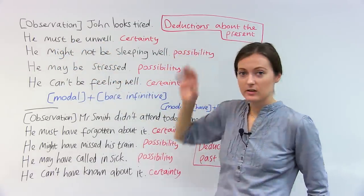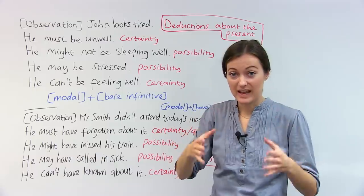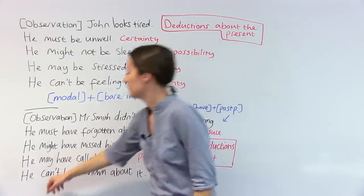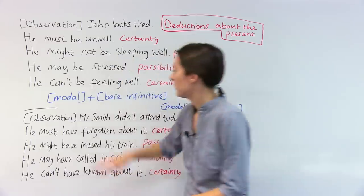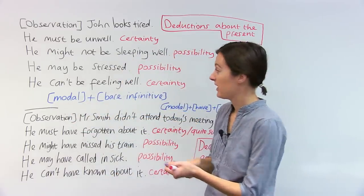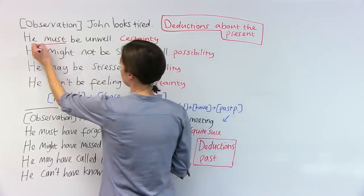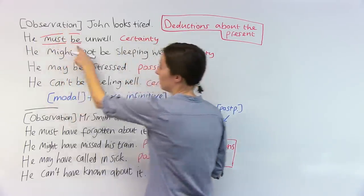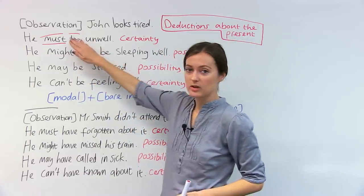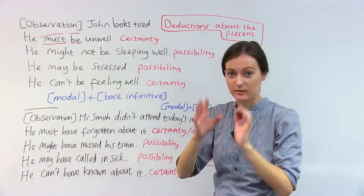When we're making deductions about the present, things that are true now, in this moment, we use this structure. We use modal verb plus bare infinitive. So in the first example, here's the modal verb, and then this is the bare infinitive. It will always take this structure to make a deduction about the present.